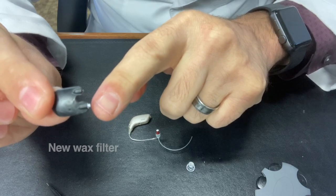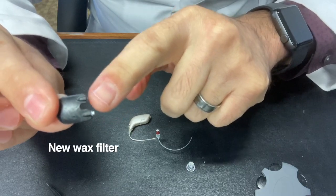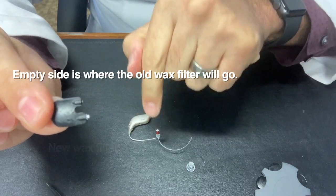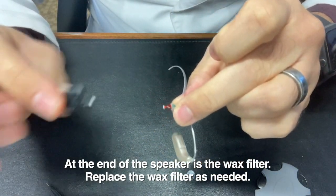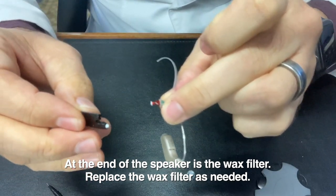That little white piece is the new wax filter, and the empty side is where the old one is going to go. So we take this device. You hold the speaker. That's this part right here, it's called the speaker.